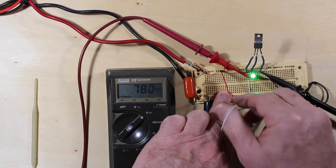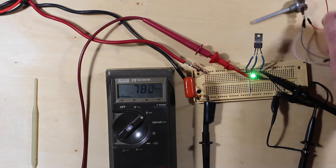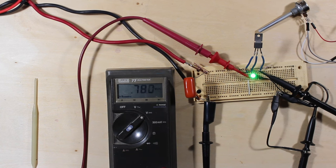There's enough current going through there now that putting the gate down to ground isn't going to make it go off. And I can just take that pot out of there altogether and the SCR stays on, which is what it should be doing.